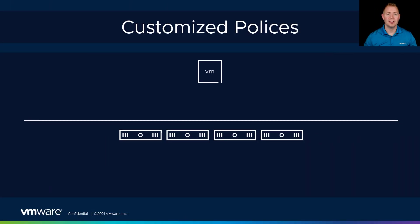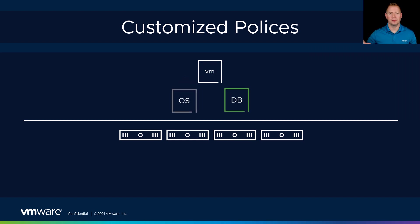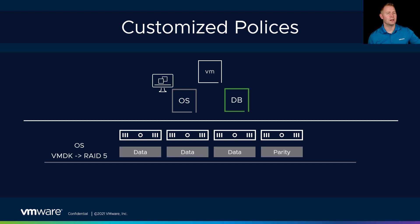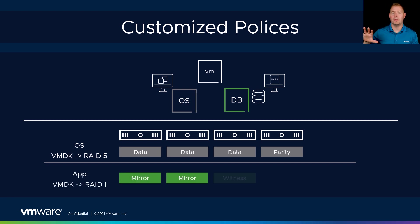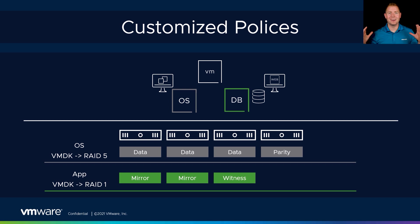One of the things I love about vSAN is we're not tied to a specific policy — we can customize it based on our needs. Let's say we've got a VM with an OS drive and an application drive. For the OS, we don't need that screaming fast performance, so RAID 5 works perfectly fine. For our application drive — let's say it's a database — we want a little bit faster performance, so we can choose our RAID 1 mirroring policies. We're not tied to a specific policy, and in a future video we'll walk through how to customize those policies for each of our VMDKs.